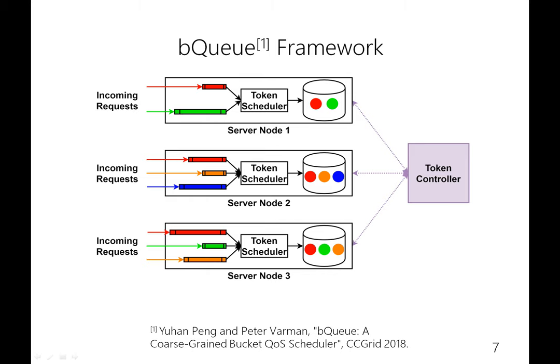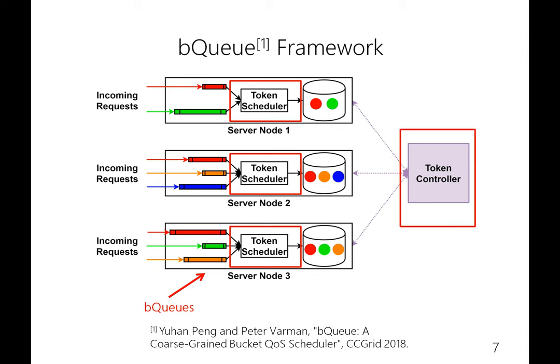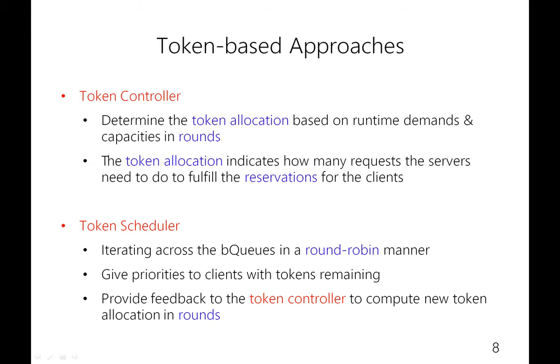As an illustration, this figure shows our previous work, the BQS framework. Requests for different clients on different servers are stored in first-in-first-out bucket queues. Each server has a token scheduler for request scheduling, and there is a token controller which determines the token allocation. At runtime, the token scheduler determines the token allocation based on the runtime client demands, server capacities, and the match reservations. The token allocation indicates how many IOs each server needs to do to fulfill the QoS requirements for each client. A token scheduler iterates across its BQs in a round-robin manner and tries to schedule one request each time. The scheduler gives priorities to clients with tokens remaining, and provides feedback to the token controller to compute new token allocations for the next round.